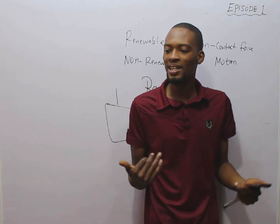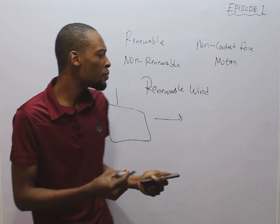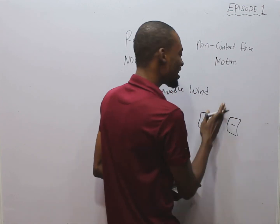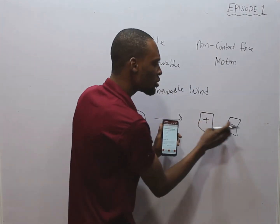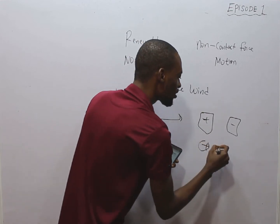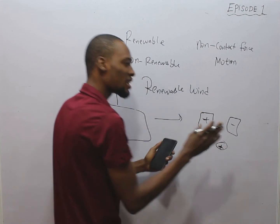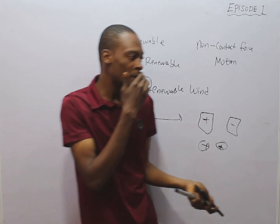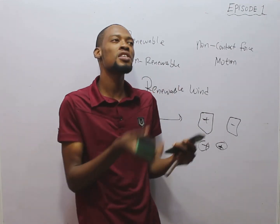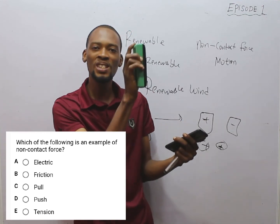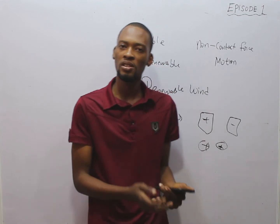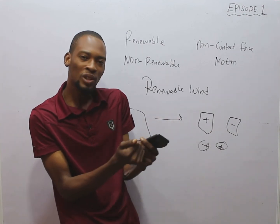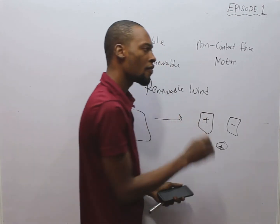Electrical force is a non-contact force — it is the force between two charged bodies. Unlike charges attract and like charges repel, and there is no physical contact between them. Gravitational force is also non-contact: anything thrown up comes back down due to gravity, but gravity is not physically holding the object. Magnetic force is similar — magnets attract or repel substances without any contact. So electric, gravitational, and magnetic forces are all non-contact forces, while push, pull, and friction are contact forces.